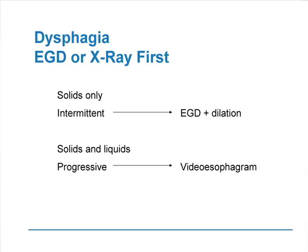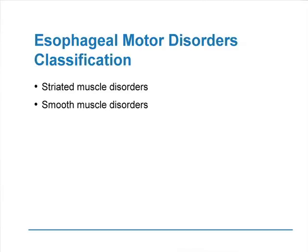The debate is whether to obtain EGD or x-ray first. From a practical standpoint, if the patient has solids-only, intermittent dysphagia, the diagnosis is likely a stricture, cancer, or Schatzki ring — I go for EGD first because I can make the diagnosis and apply treatment at the same time. If the patient has both solid and liquid dysphagia that's getting worse, I start with an x-ray to identify where the obstacle is and assess esophageal morphology.